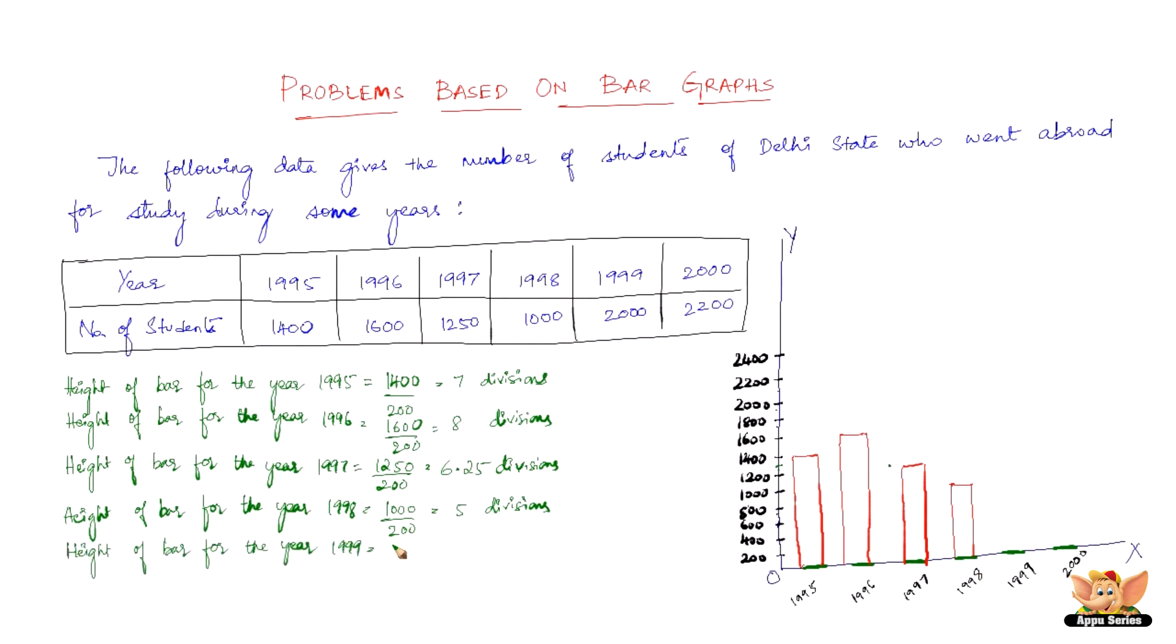Height of bar for the year 1999 which is 2000 by 200, that is 10 divisions. This is going to be one of the tallest bars. And the final one coming up now: height of bar for the year 2000 which is 2200 by 200, that is 11 divisions. This definitely is the tallest bar that we've got. So 11 divisions touches 2200.